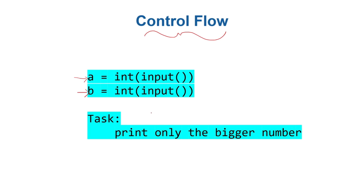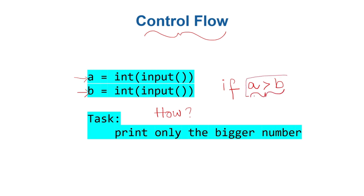So the question is: how does Python allow us to do that? For example, if `a` is bigger we should print `a`; if `b` is bigger we should print `b`. We keep talking in terms of 'if' — if `a` is larger than `b` then this condition will be true. So we must have an `if` condition: if `a` is bigger than `b`, then do certain things; otherwise don't.